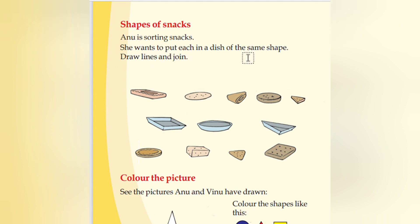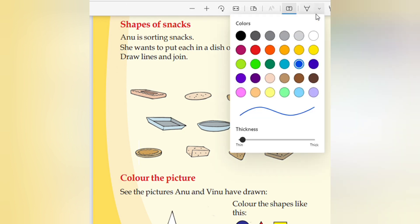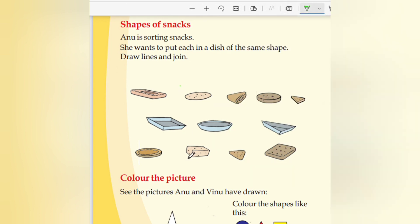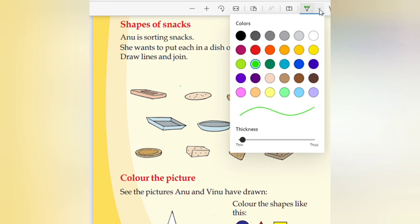She wants to put each item in a dish of the same shape. Draw lines to help Ammu. See here — these two are in one category. Select the color.